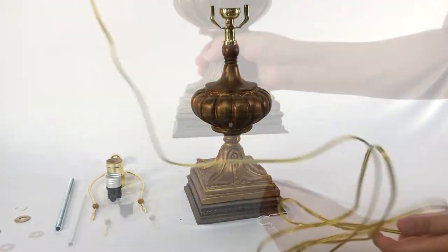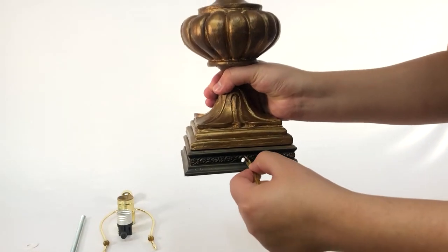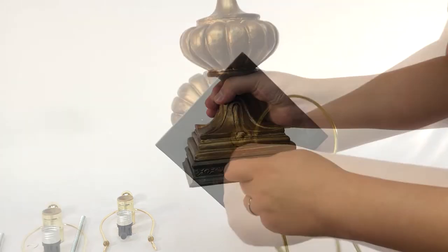Feed the lamp cord through the lamp base and up the length of the pipe, leaving a couple of inches exposed at the top.